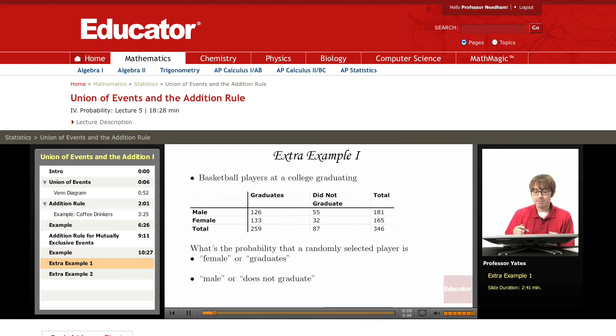So suppose we have the following basketball players at a college and we're looking at the totals on whether or not they graduate and what gender they are. What's the probability that a randomly selected player is female or graduates? So we are looking at the probability that they're female or union that they graduate.